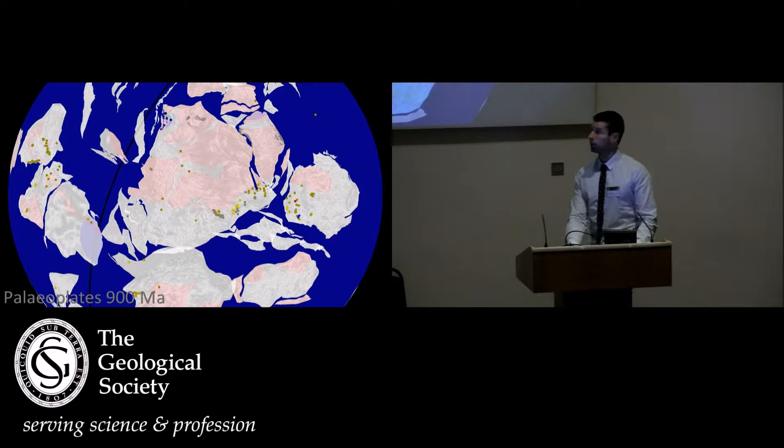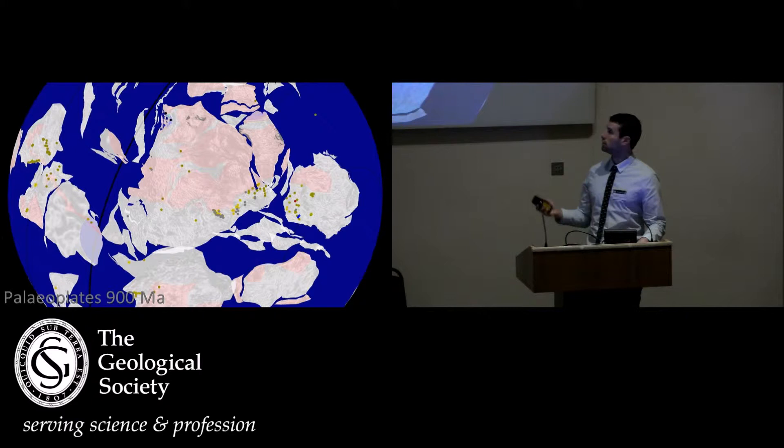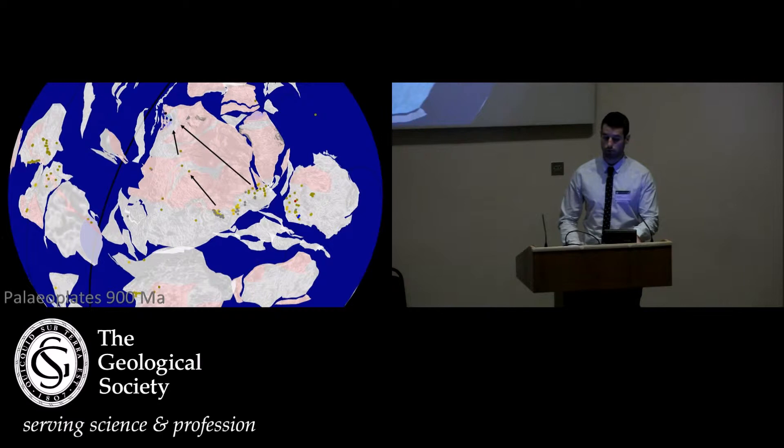Looking at 900 million years, still in the Neoproterozoic, we see a similar pattern. We see a whole bunch of source locations along the Grenville orogeny, some here as well, with two samples being deposited up there. So again, it seems entirely plausible that there's a flow path across Laurentia.